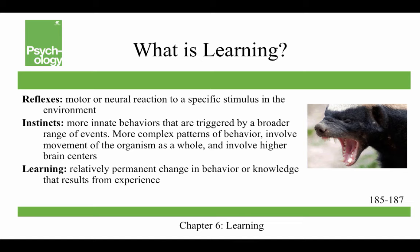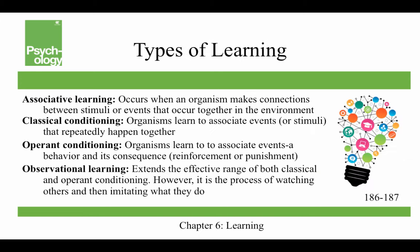Learning, however, is a relatively permanent change in behavior or knowledge that results from experience. We have a number of different types of learning to talk about, but they're all related to associative learning — that occurs when you make connections between stimuli or events that occur together in the environment. This used to be referred to as temporal contiguity, where things come together in time, and it's really central to both types of conditioning and observational learning.